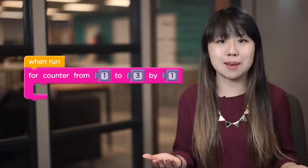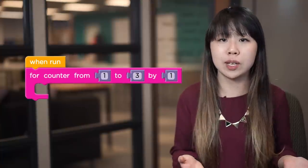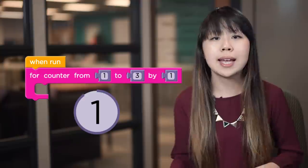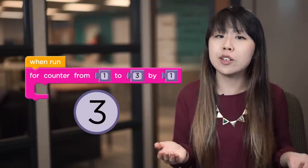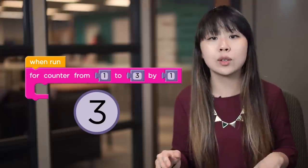The for loop knows how many times it has run by using a counter variable that is set to the starting value at the beginning of the loop and has the increment added to it each time the loop is run. As soon as the counter variable is greater than the ending value, the loop stops running.